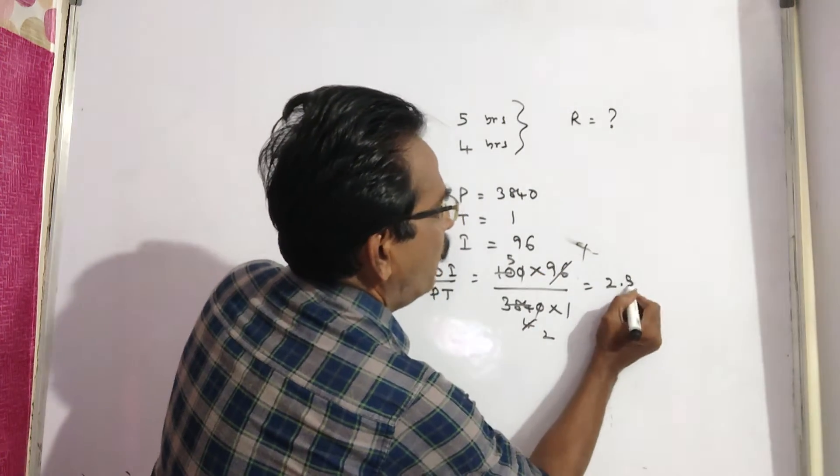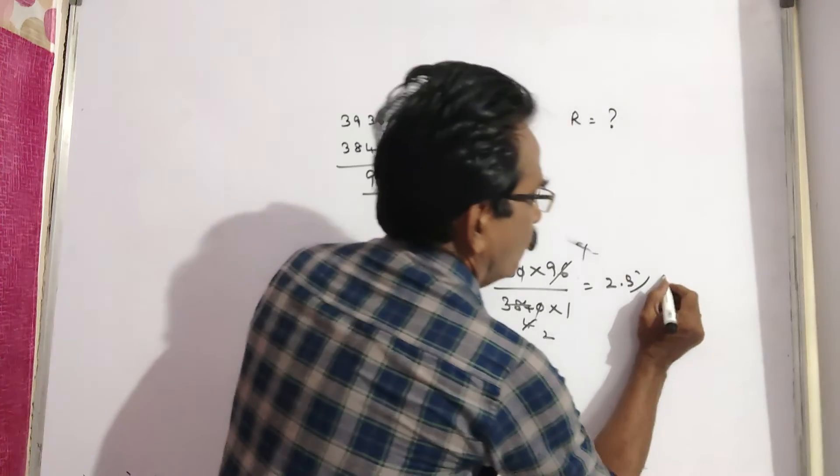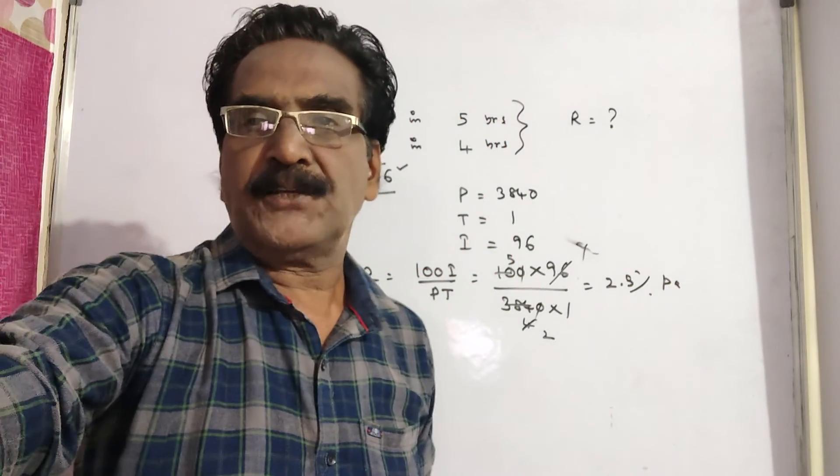5 by 2 means 2.5% per annum, friends. Okay friends, thank you.